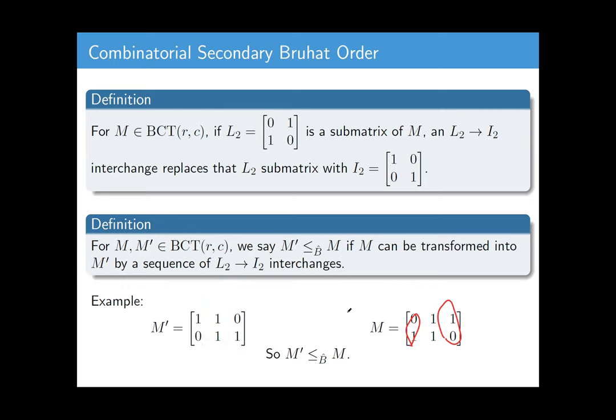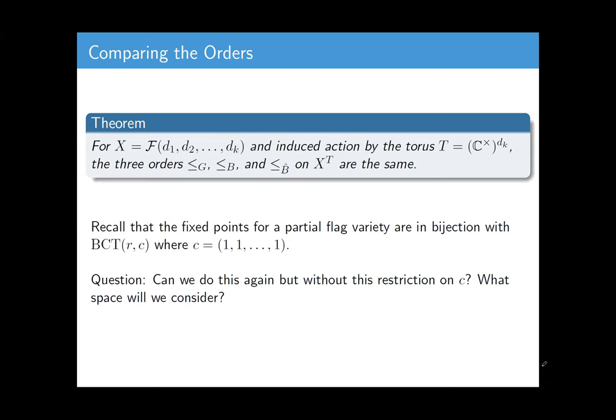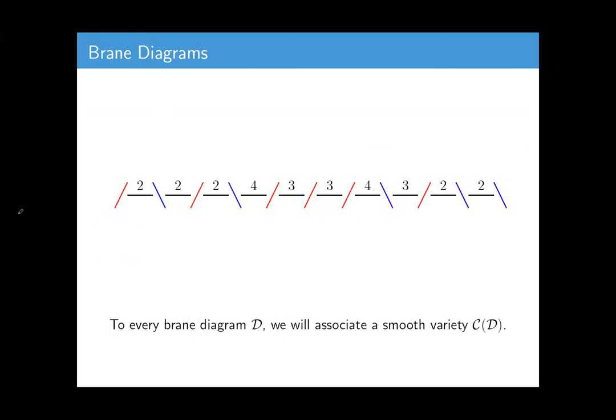So those are three partial orders that I've just defined on these BCTs. Of course, the good news is for the case of flag varieties, they're all the same. That's the big important thing. So if you want to get your hand on this geometric order, we have a nice combinatorial code via these two other partial orders that we've defined. They're all the same thing for partial flag varieties. But do recall that there was one restriction that happened, which is when I was describing the fixed points of partial flag varieties, I was only allowed to use BCTs where the column sums are 1. So what if I remove that restriction?